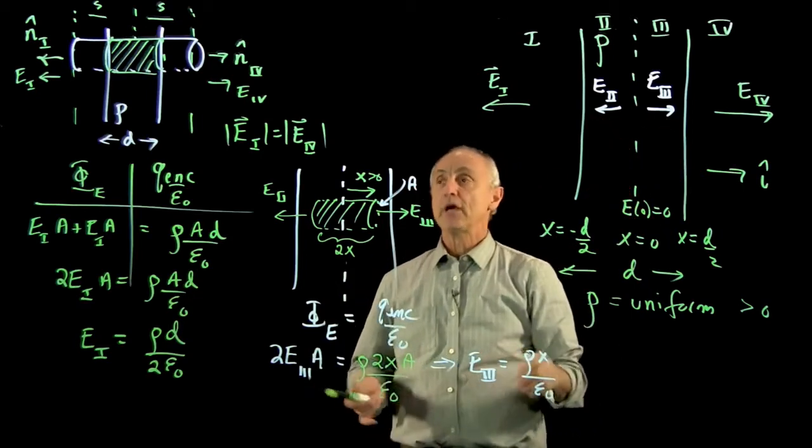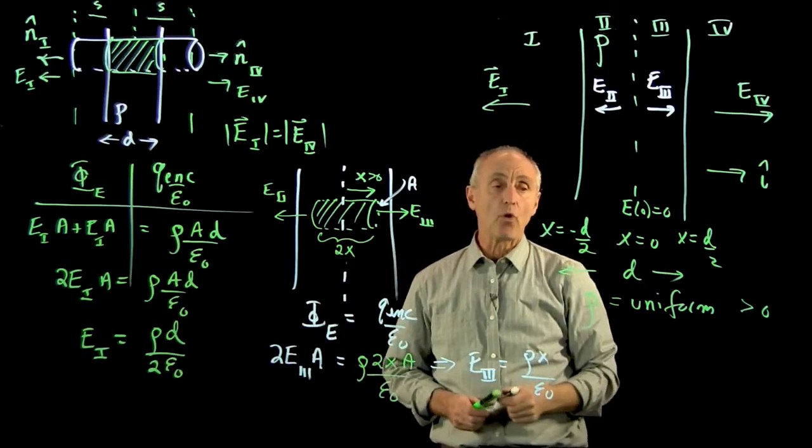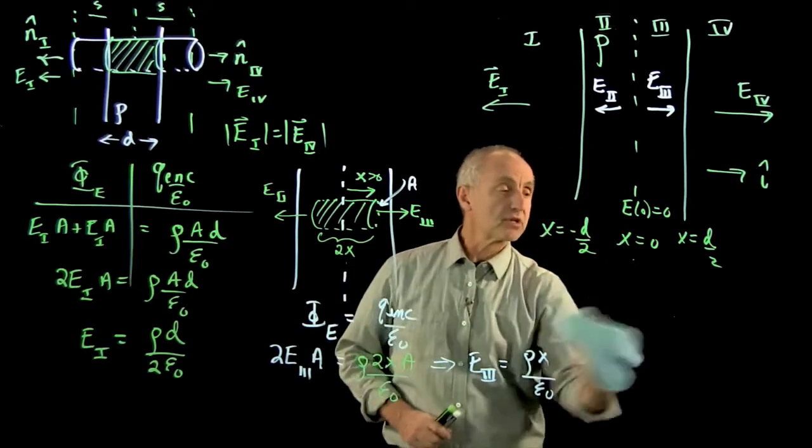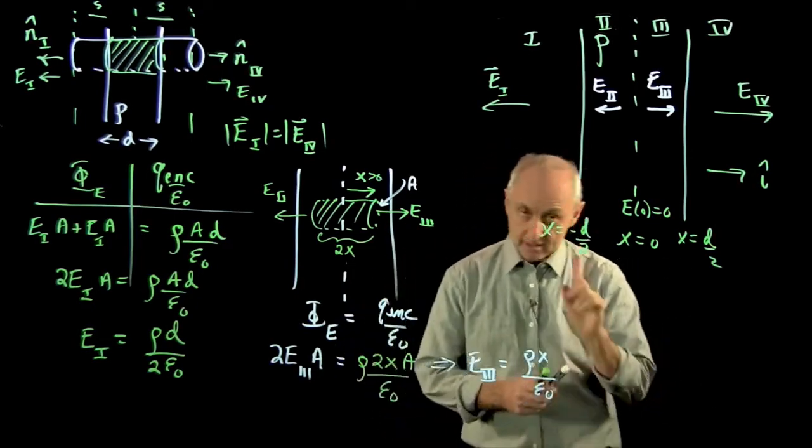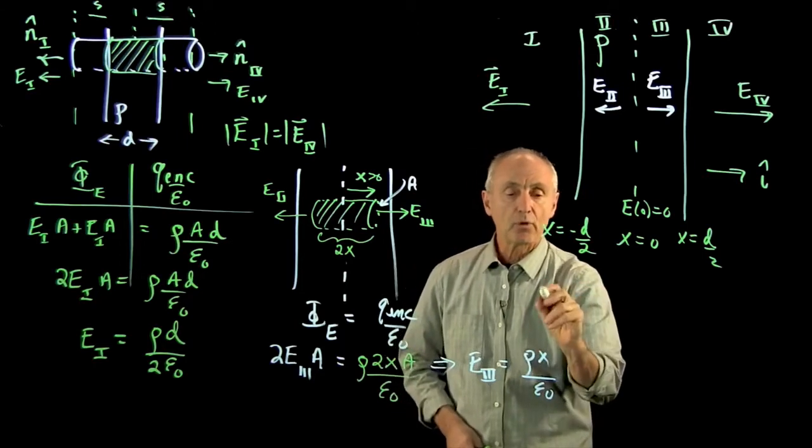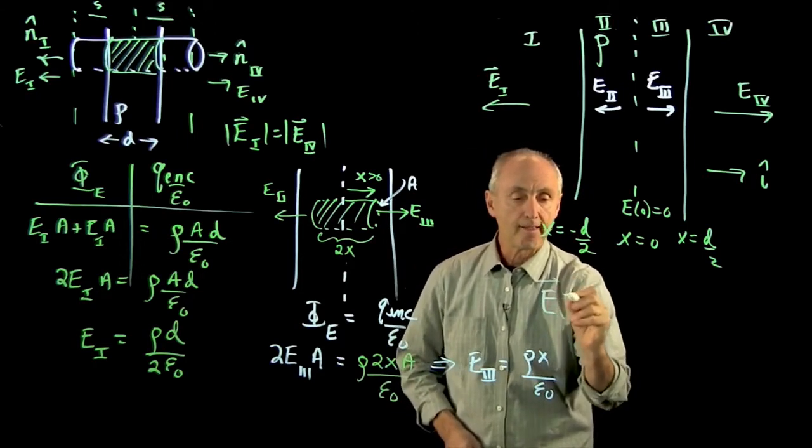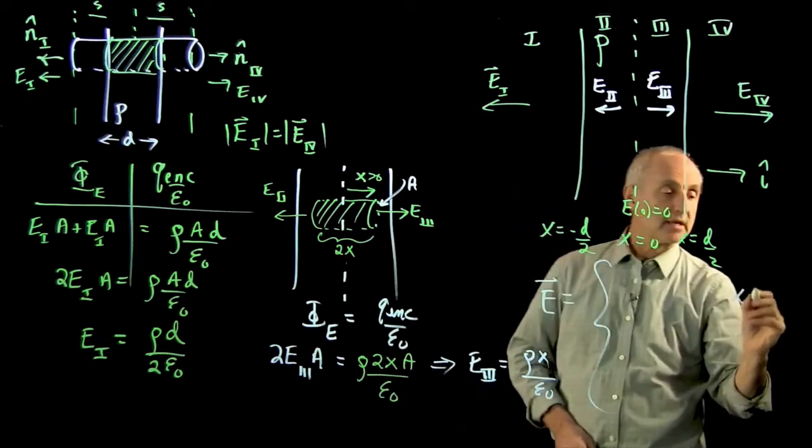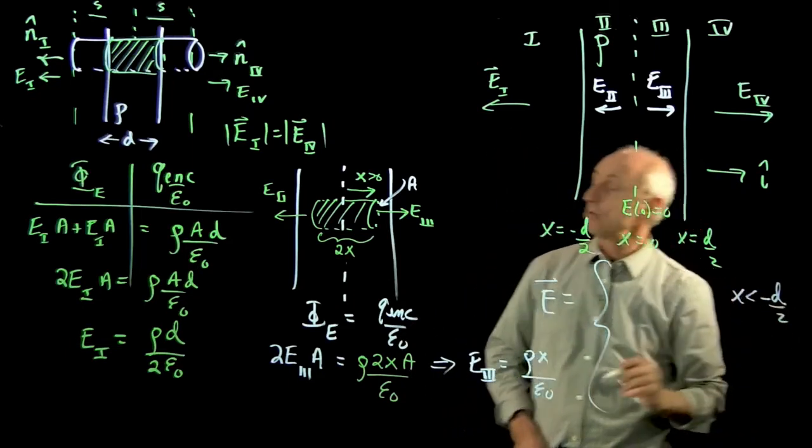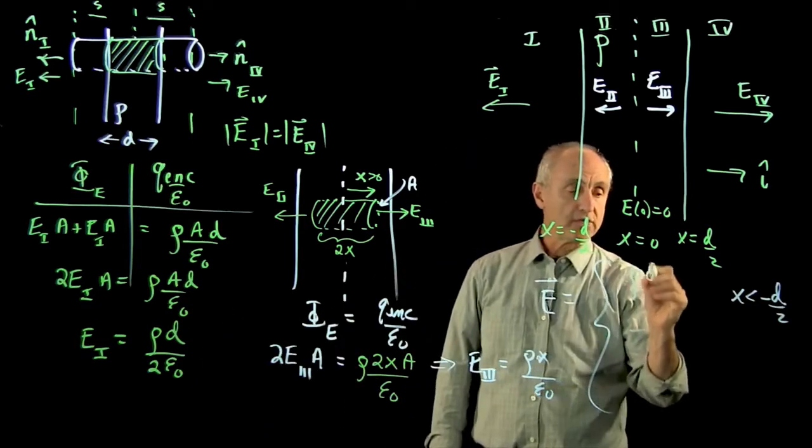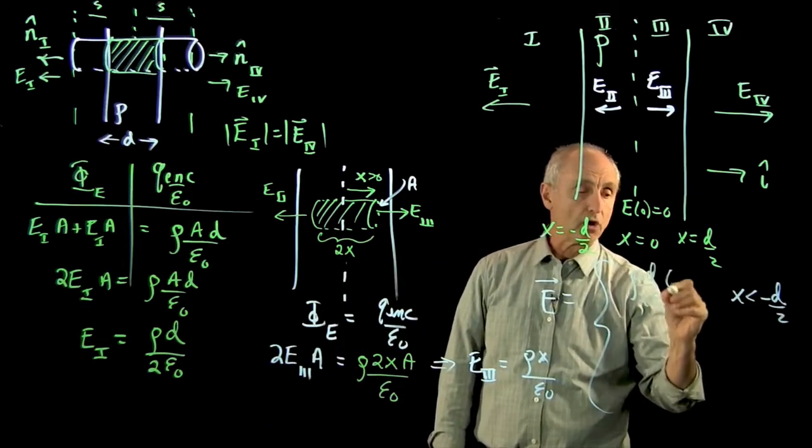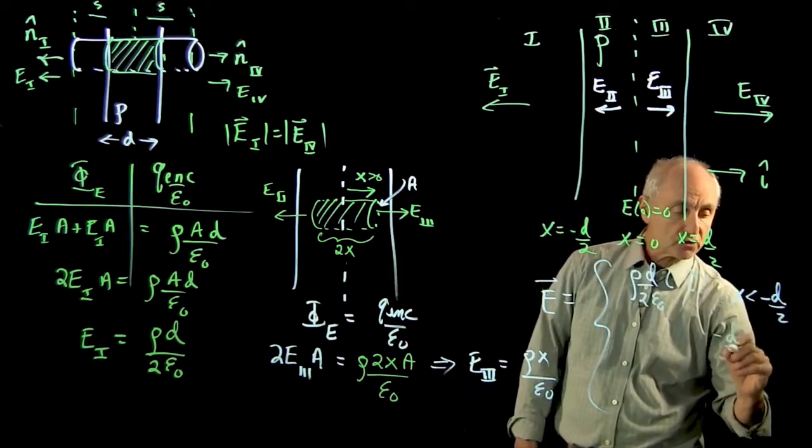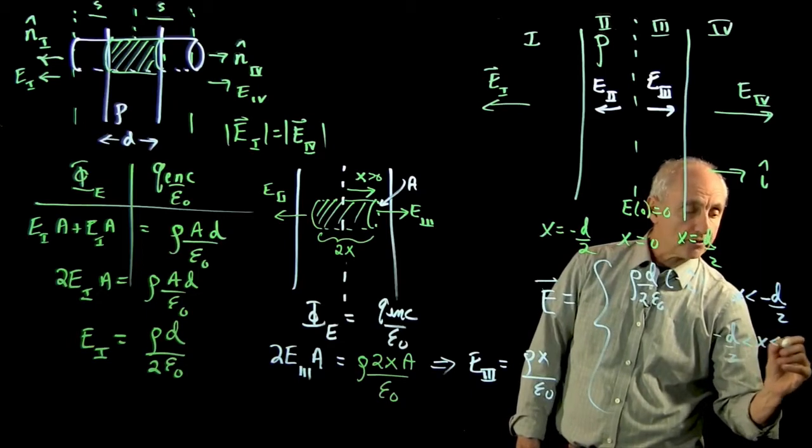And we want to finish by writing down an expression for all of the electric fields in these regions. And I'm just going to give myself a little space over here. And this is a little complicated, but we'll write e. So in region 1, which is when x is less than minus d over 2, we calculated that field rho d over 2 epsilon 0 in the minus i hat direction. Now, I can do something interesting, which you'll see handles both cases.